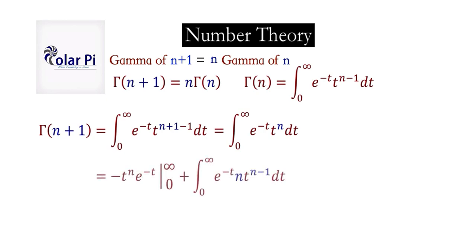Using the integration by parts formula, we can write this here. In this part we have uv, where u is t to the n, and since dv is e to the minus t dt, v is negative e to the minus t. Therefore, that negative and then the e to the minus t, and we evaluate uv from zero to infinity.